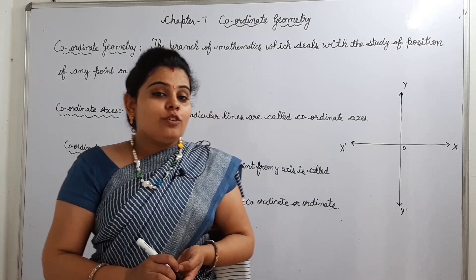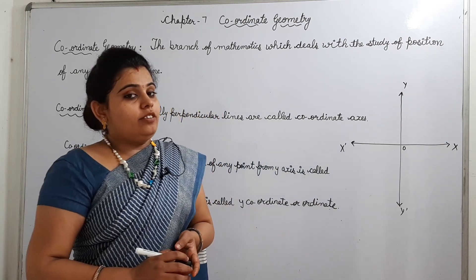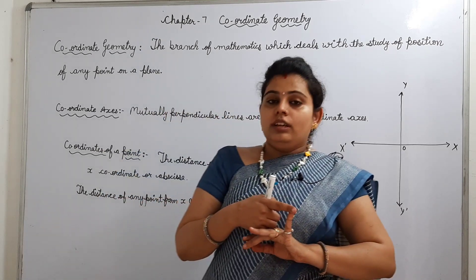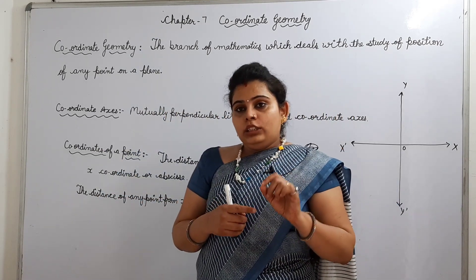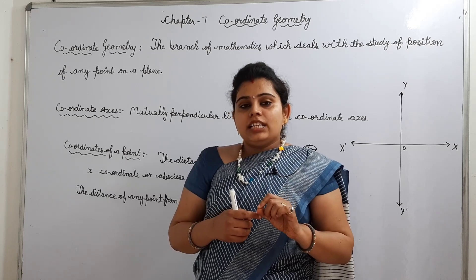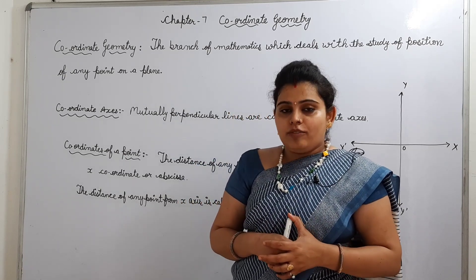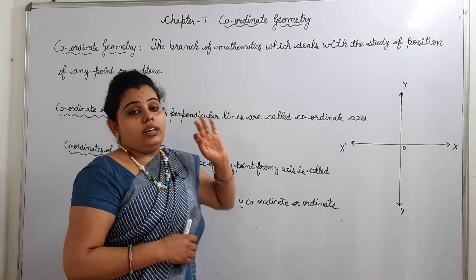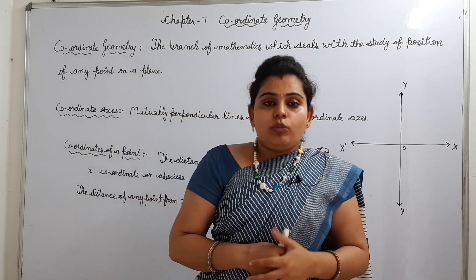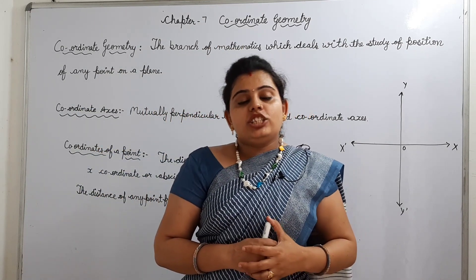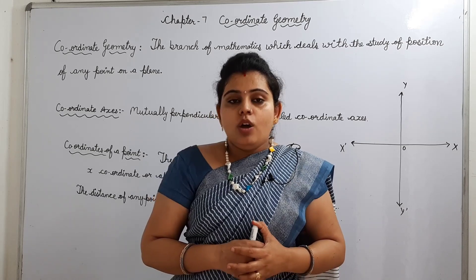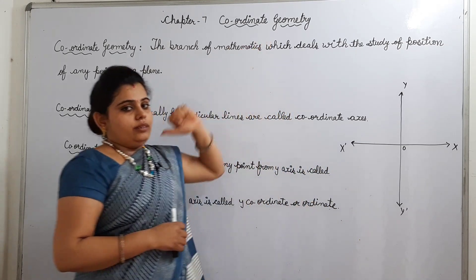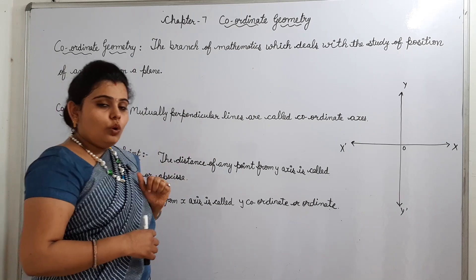Before summer vacations, we completed chapters 1st, 2nd, 3rd and 4th. Now today in today's class, we will start our Chapter 7, coordinate geometry. Chapters 5 - arithmetic progression and Chapter 6 - triangles, we will do later. So let's come to Chapter 7, coordinate geometry.